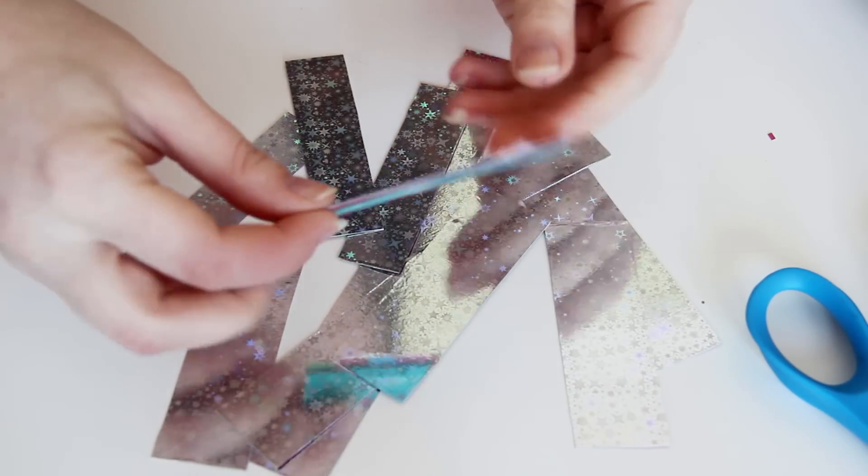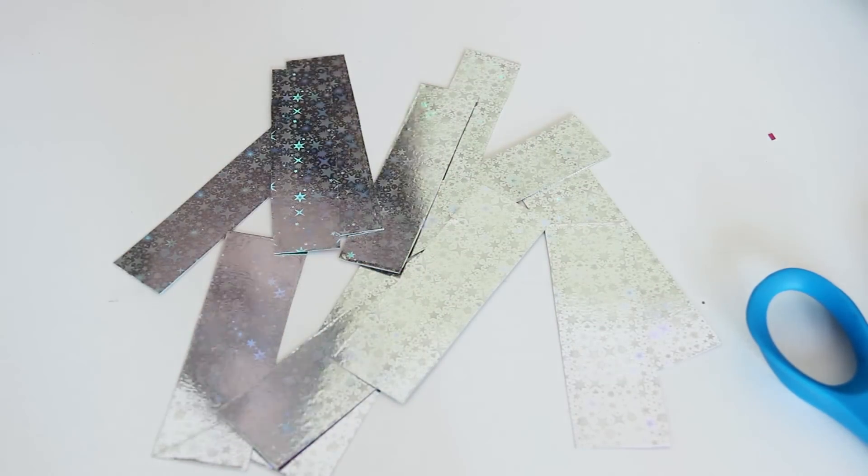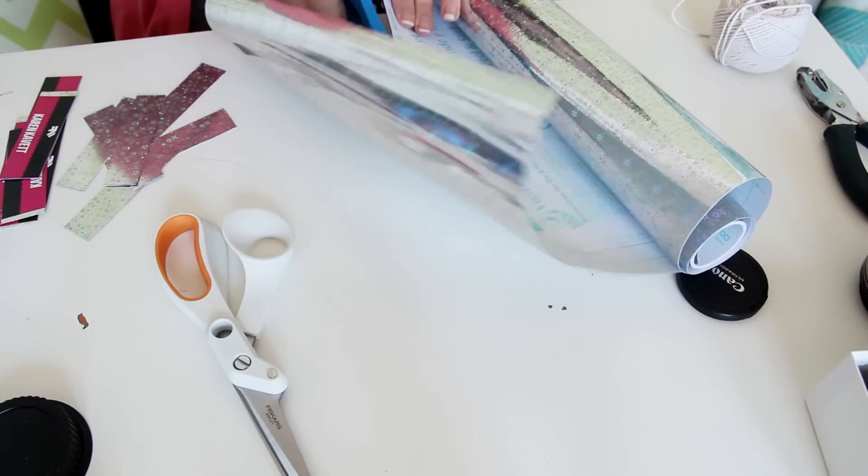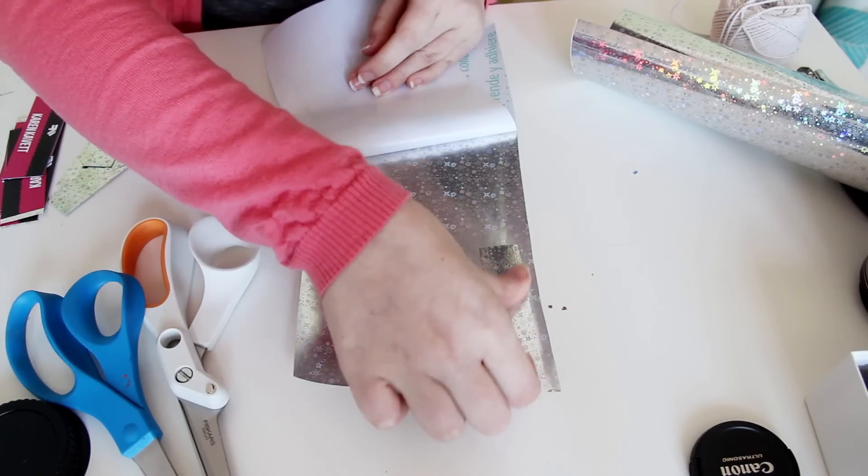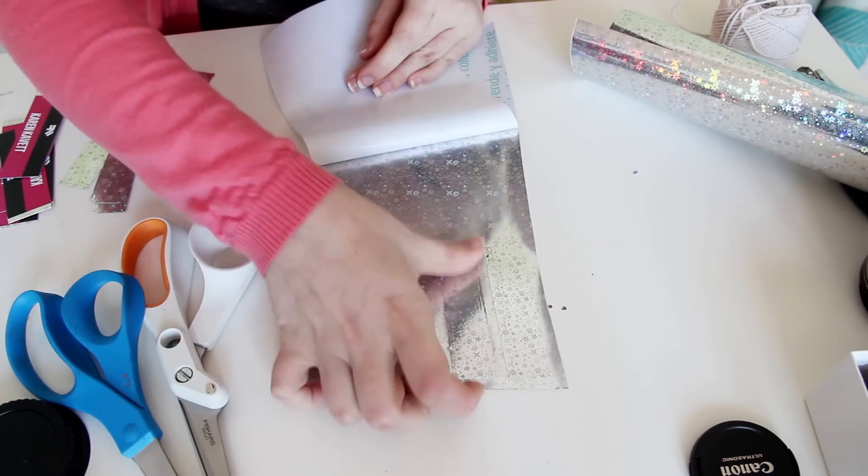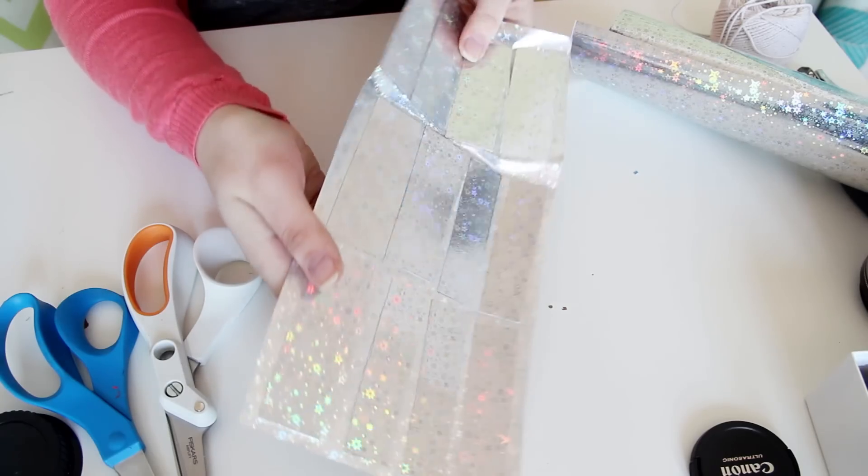Okay, so once all of the pieces are covered on one side by the silver laminate, now it's time to do the other side. Do the exact same thing, cutting off a piece of laminate and then laying the pieces down on it. Once everything is stuck down, just cut them out one more time.